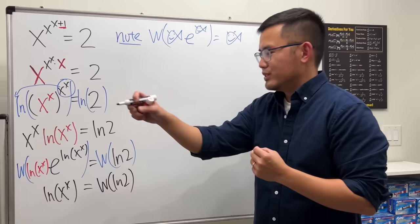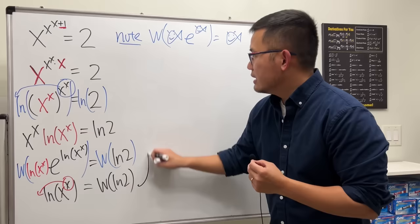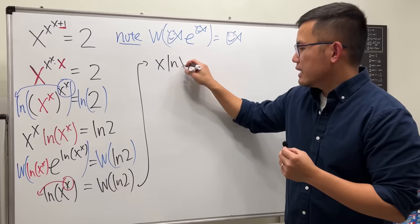Hey, what can we do right here? Once again, we can put the x to the front, and then this right here will give us x in the front times ln x equals the Lambert W function of ln 2.